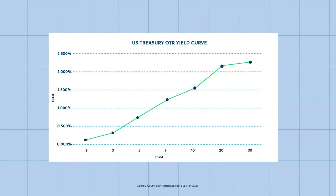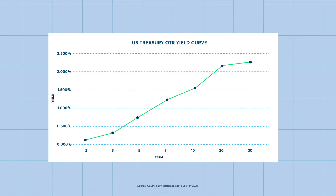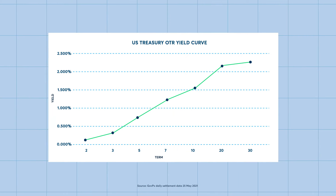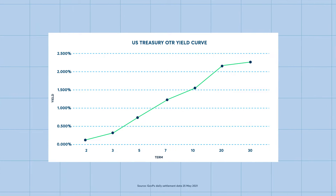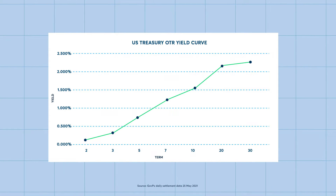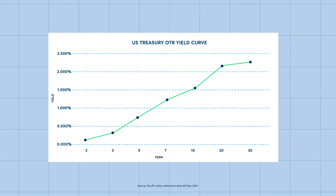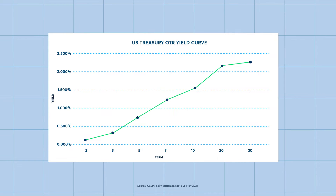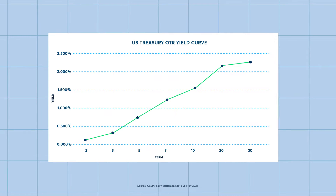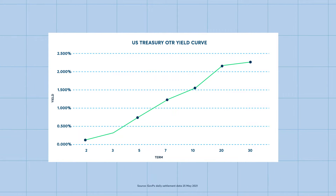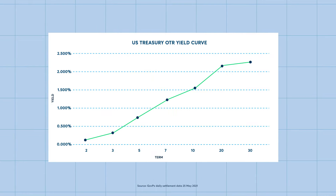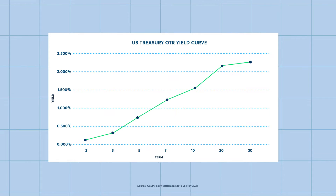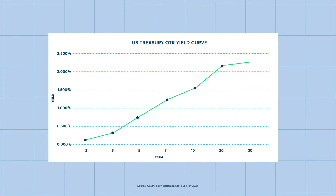What is a U.S. Treasury benchmark rate? The current yields on the most recently auctioned Treasury securities at certain locations along the Treasury yield curve. They are currently defined by the following maturity terms: 2-year, 3-year, 5-year, 7-year, 10-year, 20-year, and 30-year.